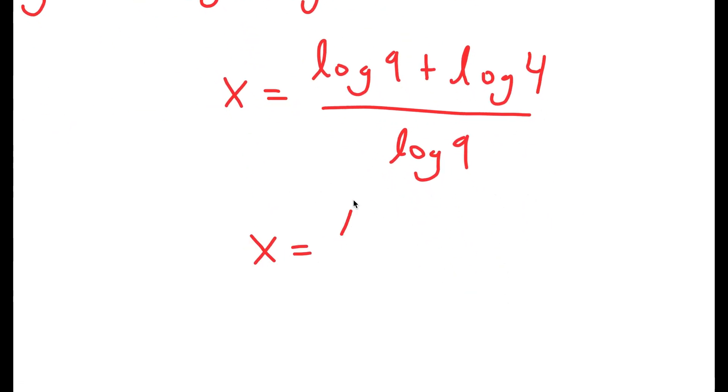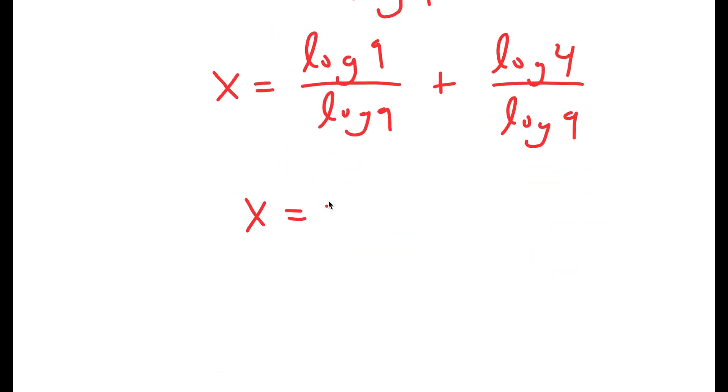So now this is equal to log 9 over log 9 plus log 4 over log 9, which is equal to 1 plus log of 2 squared over log of 3 squared.